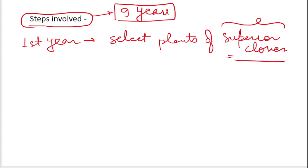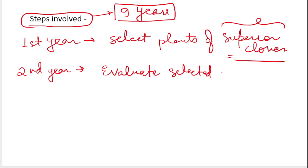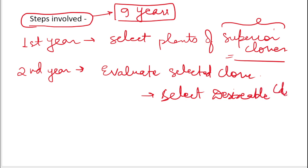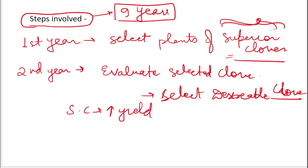In the second year, we evaluate the selected clones, or we select the most desirable clones. If the plant has high yield, the second step is to evaluate those selected clones.